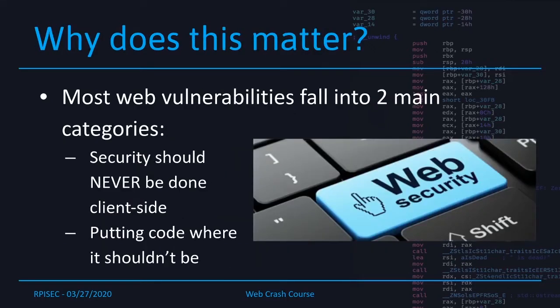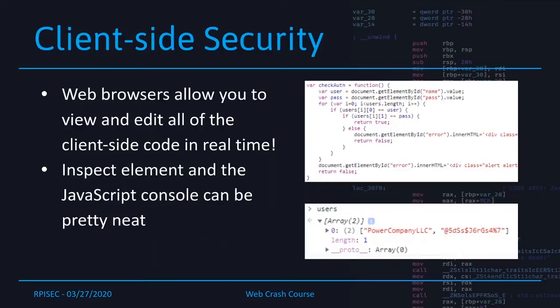So the question is: why does this matter? Similarly to how the code is split into two sections, most web vulnerabilities also fall into two main sections. The first is that any security done on the client side is just wrong — it should never be done there. Additionally, sometimes people put code where it really doesn't belong.